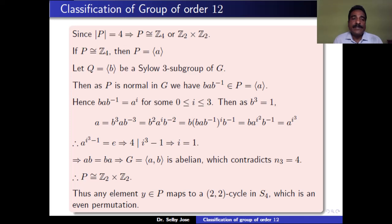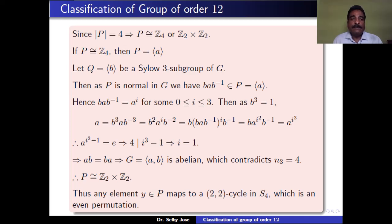When i = 1, we get AB = BA, meaning G is abelian. But if G is abelian, all subgroups are normal, so all Sylow p-subgroups are unique. However, we have N3 = 4 Sylow 3-subgroups, which is not possible. Therefore G cannot be abelian, and P is not isomorphic to Z4.